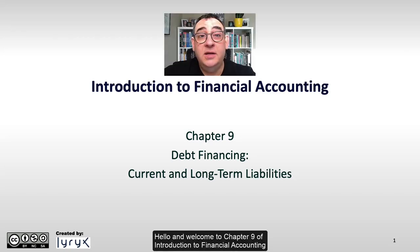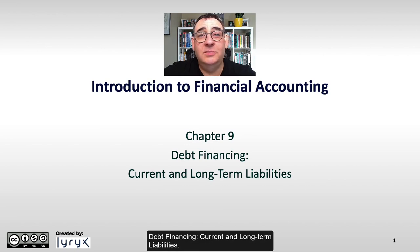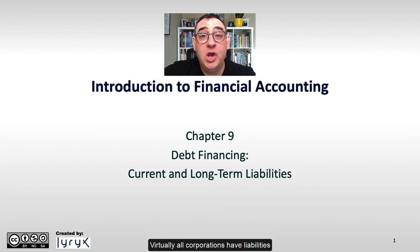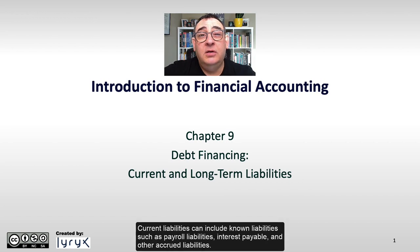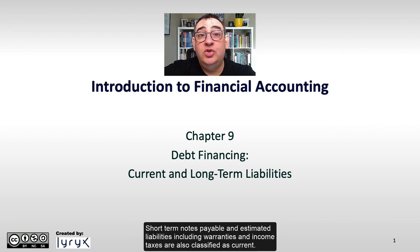Hello and welcome to Chapter 9 of Introduction to Financial Accounting: Debt Financing, Current and Long-Term Liabilities. Virtually all corporations have liabilities, and these liabilities must be classified on the balance sheet as either current or long-term. Current liabilities can include known liabilities such as payroll liabilities, interest payable, and other accrued liabilities. Short-term notes payable and estimated liabilities including warranties and income taxes are also classified as current.